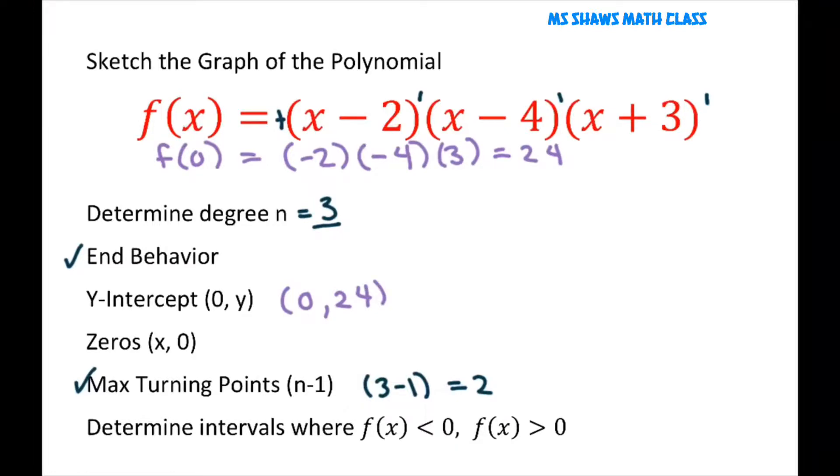The zeros are when y is 0. So when this whole thing is 0. So that's going to give you 2, 4, and negative 3 here for these factors. So we have (2, 0), (4, 0), and (0, negative 3), and all these have multiplicity of 1.